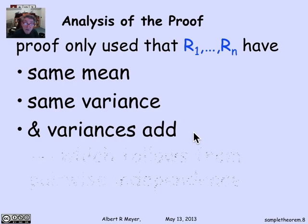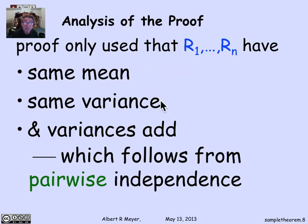Now, additivity of variances only requires pairwise independence. It didn't even require the hypothesis that they were mutually independent. And it didn't require the previous proof that we went through. Did not ever use the fact that the r's had the same distribution, that they need not be identically distributed. It was sufficient that they have the same mean. We can summarize what we really proved when we thought we were proving the law of large numbers.